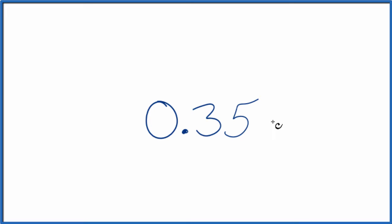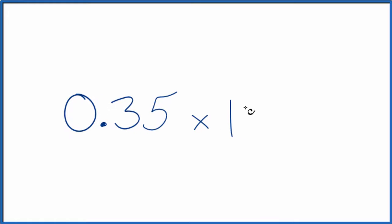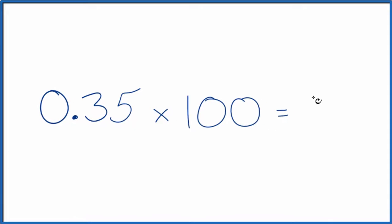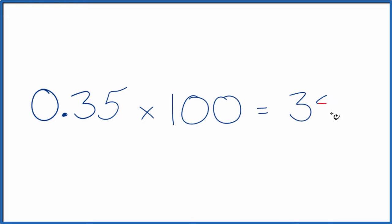First off, we could just multiply by 100. When we have our decimal, we multiply it by 100, that gives us our percent. 0.35 times 100, that's 35 percent. That's the first way.